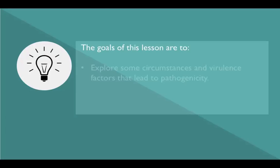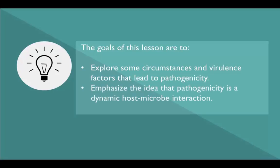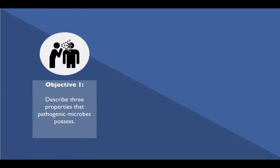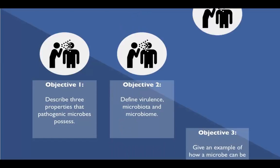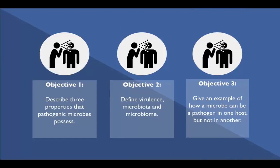The goals of this lesson are to explore some circumstances and virulence factors that lead to pathogenicity, and emphasize the idea that pathogenicity is a dynamic host-microbe interaction. At the end of the lesson, students should be able to describe three properties that pathogenic microbes possess, define virulence, microbiota, and microbiome, and give an example of how a microbe can be a pathogen in one host but not in another.